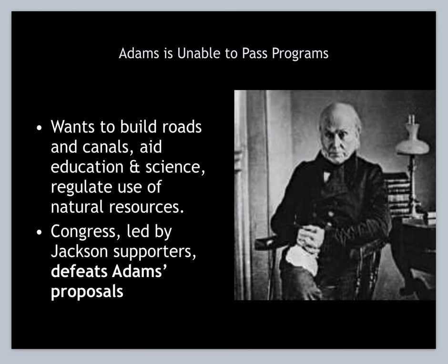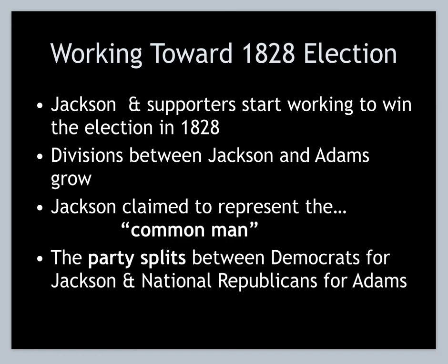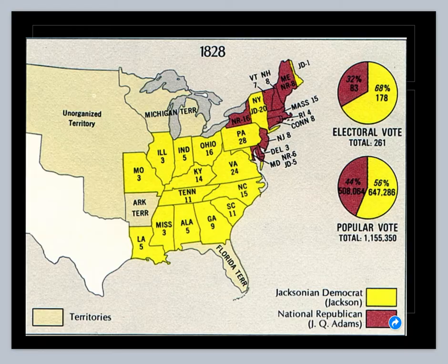In the election of 1828, Jackson's going to run again and he is going to win. His big thing is he wants to extend voting rights to the common man. Before, you had to be a wealthy white landowner to vote. He wants the regular working man to be able to vote and a larger voter turnout — not Native Americans, slaves, or women, but the common man. Andrew Jackson crushes John Quincy Adams; they run it back and he beats him pretty handily.